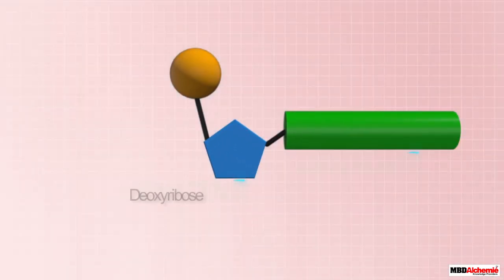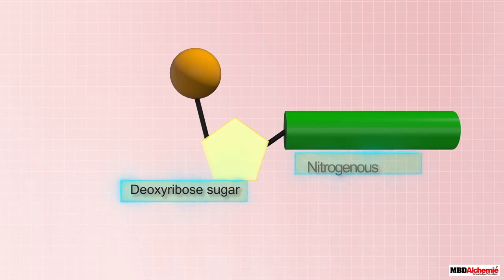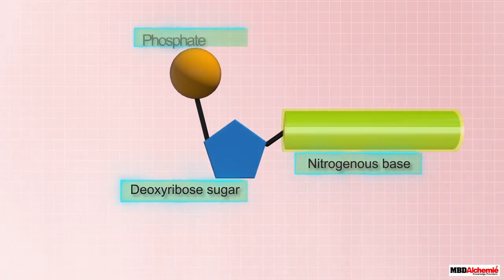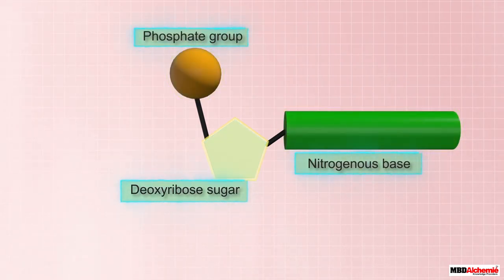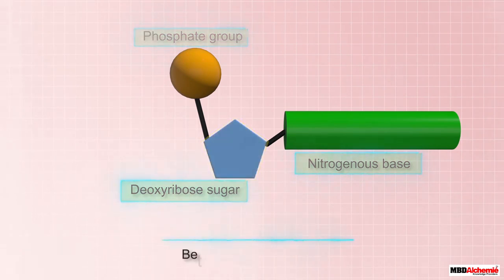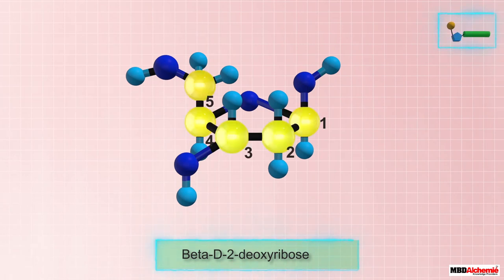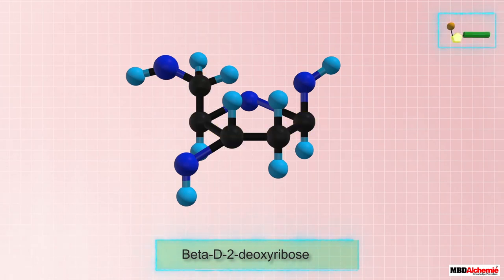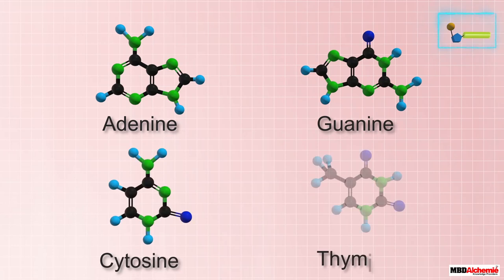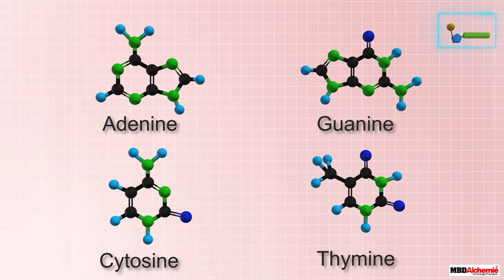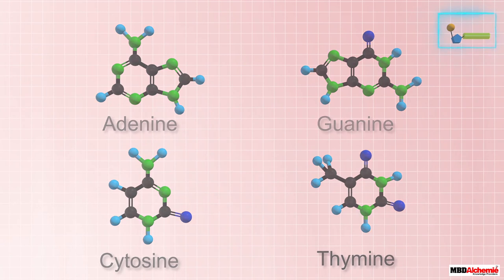A single nucleotide in turn is made of three components: a sugar, a nitrogenous base, and a phosphate group. The sugar in a nucleotide of DNA is beta-D-2-deoxyribose, which is a pentose with five carbon atoms.